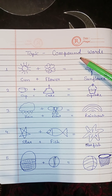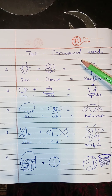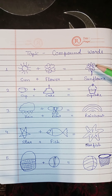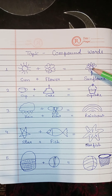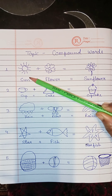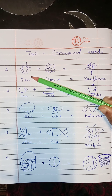I'm going to tell you what compound words are. Compound words are words made from two different words which together form a new word. As you can see over here, students, this is the picture of the sun.